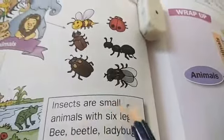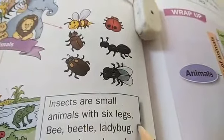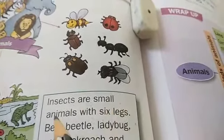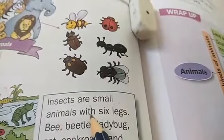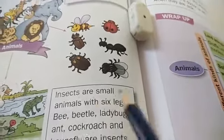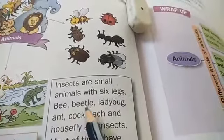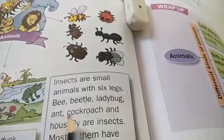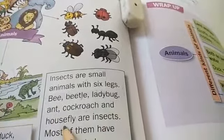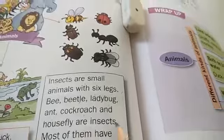Insects are small animals with six legs. Insects are small animals with six legs. Examples: beetle, ladybug, ant, cockroach and housefly are insects.